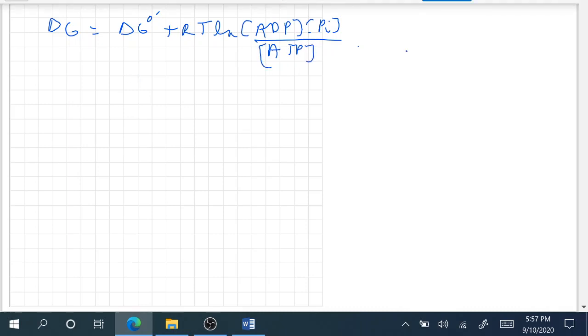All right, and the concentration of ATP is equal to 3.4 millimolar, the concentration of ADP is equal to 1.3 millimolar.